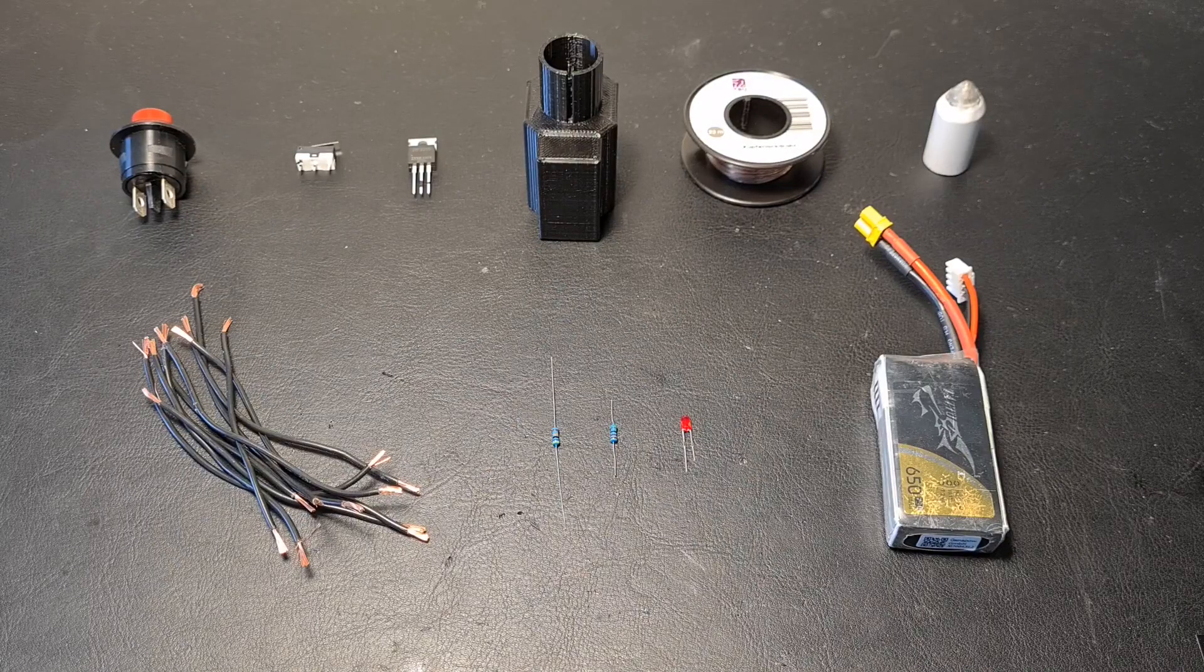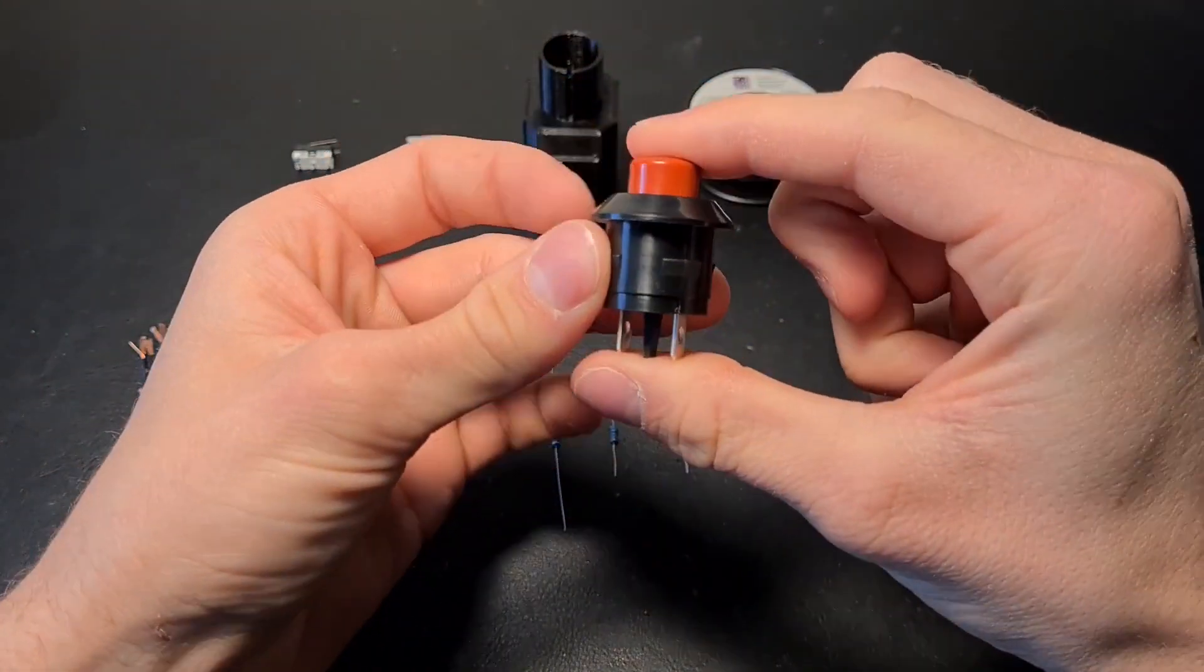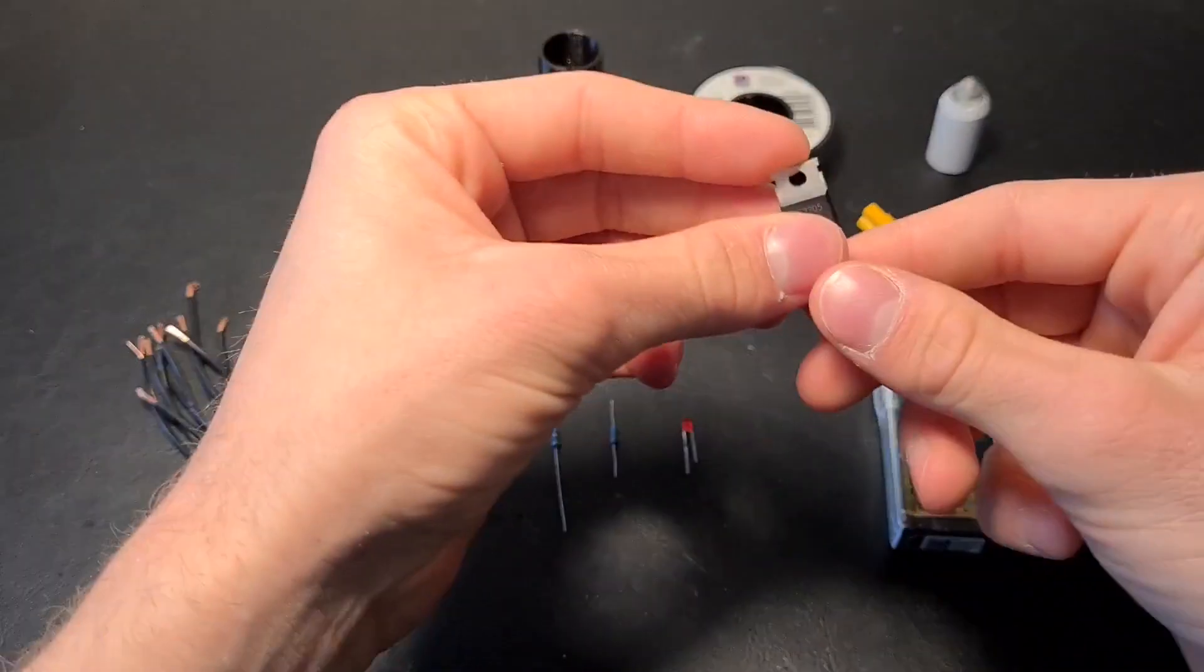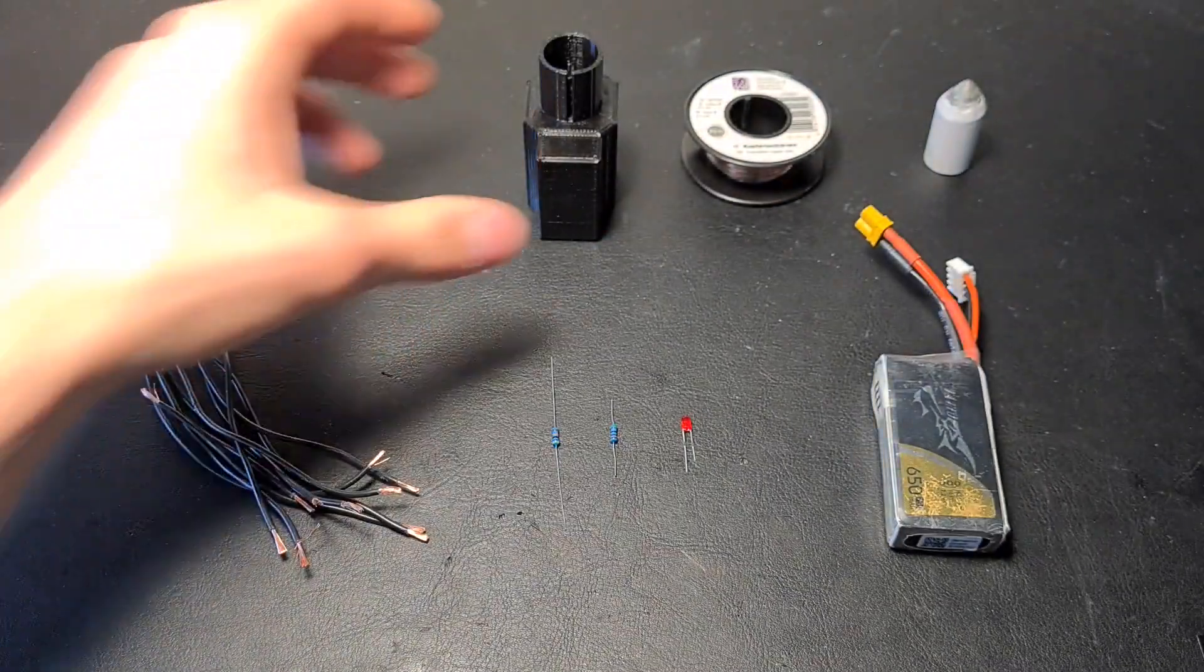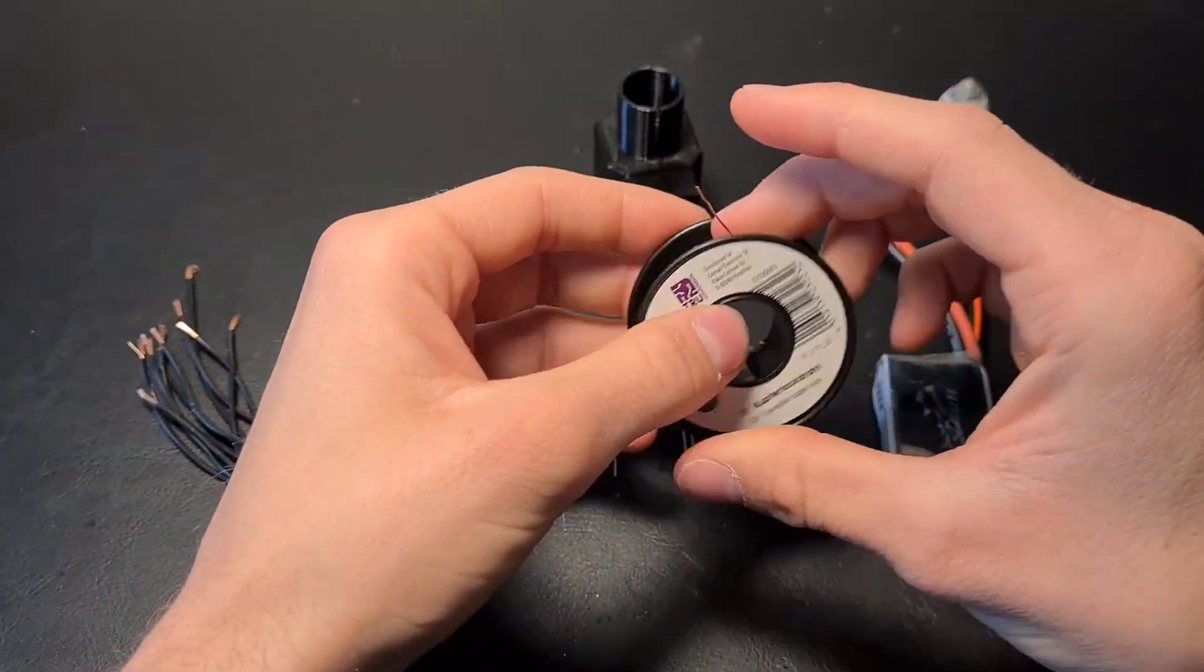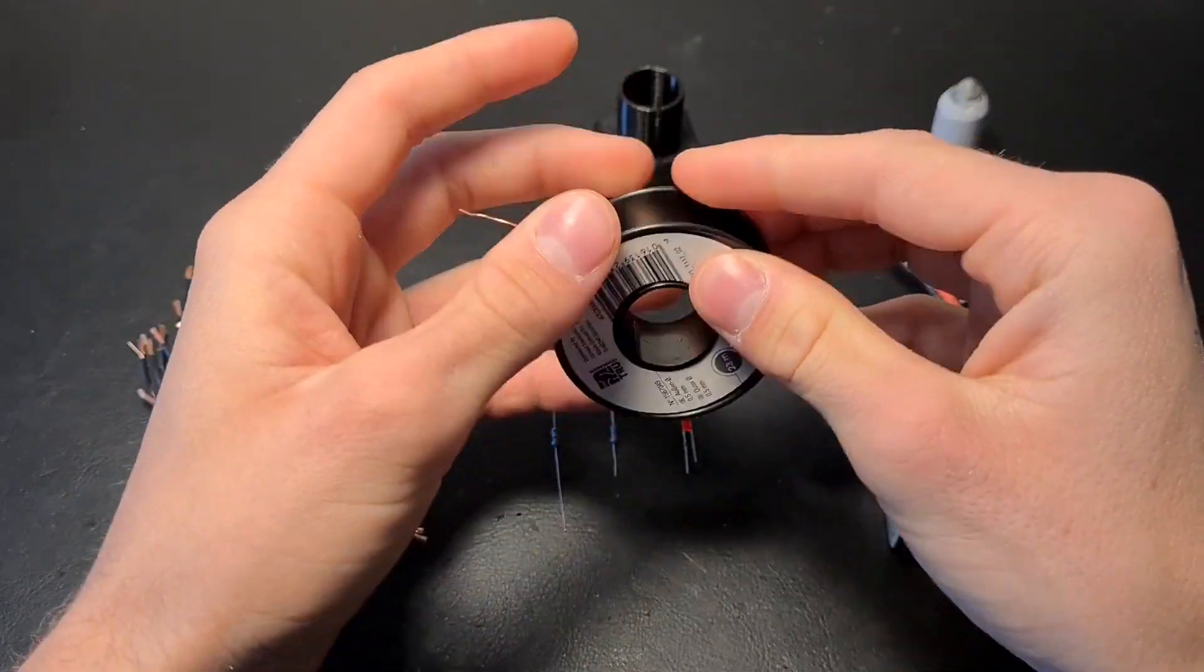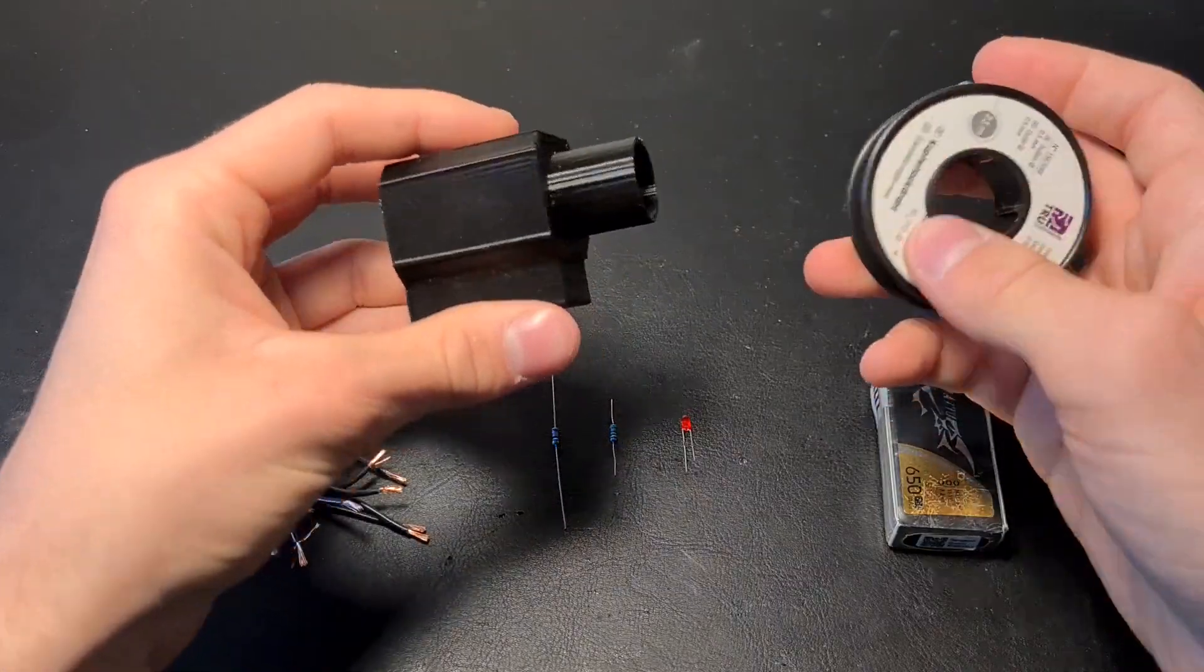Here we have all the components needed for this setup. We have this large switch, which we're going to use to control the start of the experiment. We have this micro switch, which will detect the projectile. We have this MOSFET. I will explain how this works later on. And then we have this holder. Then we have this inductor, which is basically enameled copper wires wound tightly around this piece of plastic, and this will generate the magnetic field.